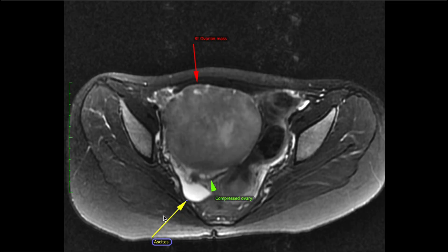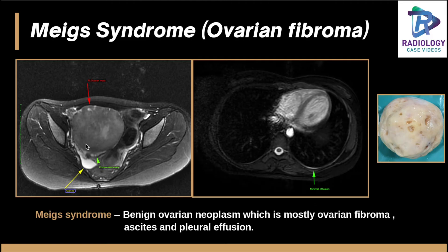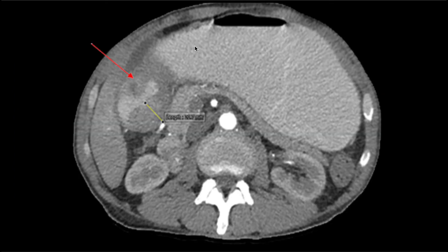This was a 23-year-old young female with a huge right ovarian mass. The compressed ovarian parenchyma is visible — the ovary was not torsed — and there was significant internal vascularity, ascites posterior to the lesion, and mild pleural effusion. This is a classical Meigs syndrome, where an ovarian fibroma is present. On histopathology, the ovarian fibroma is confirmed. In the scenario of a benign ovarian neoplasm, mostly ovarian fibroma, if ascites and pleural effusion are present, this is a classical Meigs syndrome.